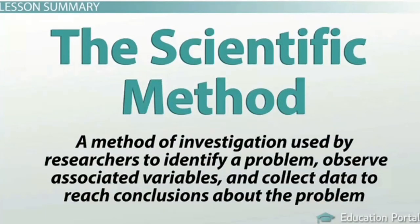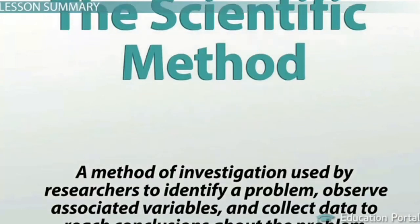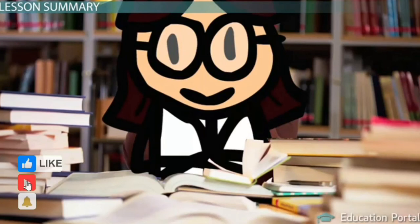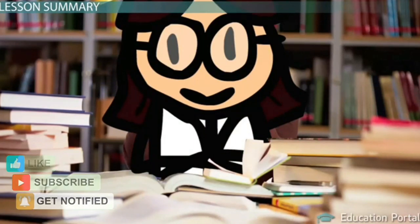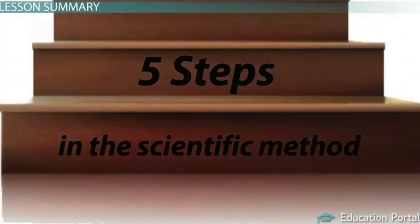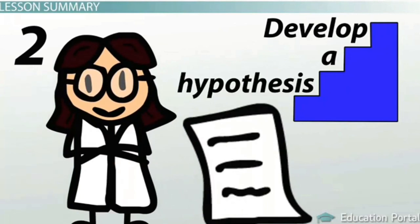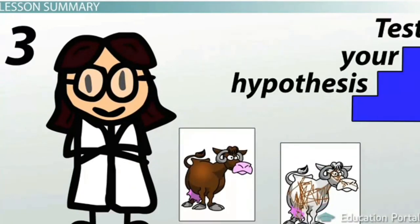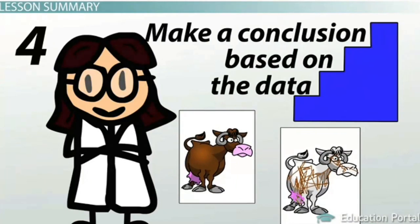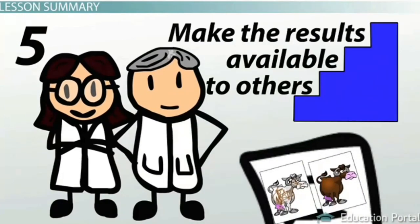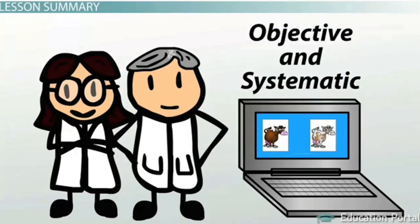In summary, the scientific method is a method of investigation used by researchers to identify a problem, observe associated variables, and collect data to reach conclusions. Human growth and development research utilizes the scientific method to validate assumptions. The five steps are: first, select a research area; second, develop a hypothesis; third, test your hypothesis; fourth, make a conclusion based on the data; and fifth, make the results available to others. Applying the basic steps of the scientific method allows human growth and development research to occur in an objective and systematic way.